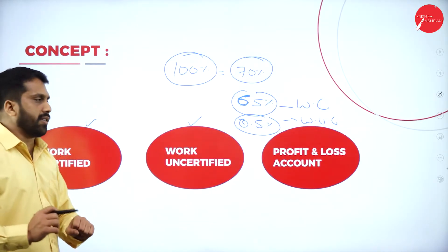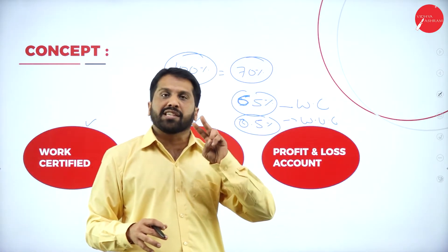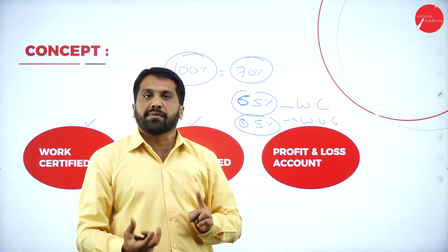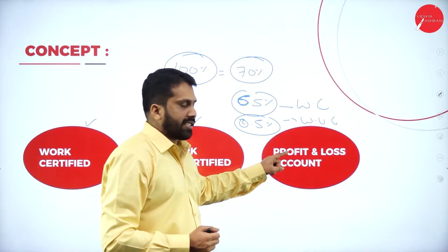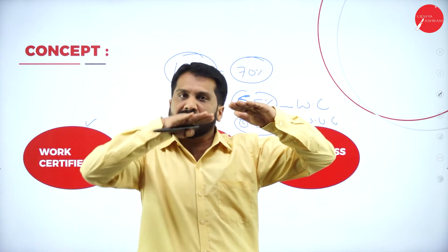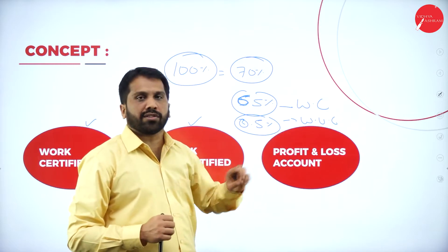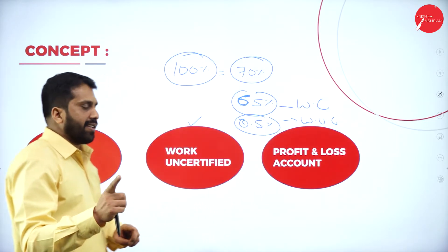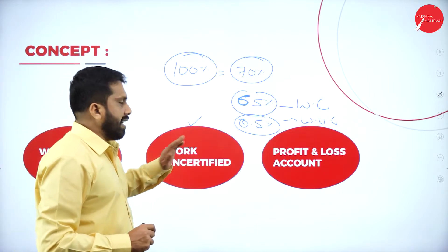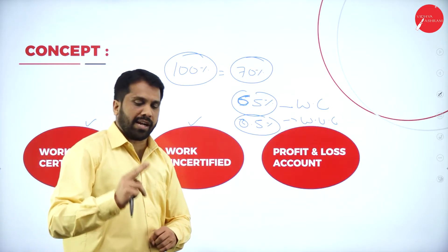Now, what is a profit and loss account? In your contract, if it is a 2-year contract, in the second year whatever profit you get, we call it profit and loss. If your income is more and expenditure is less, we call it profit. You now understand work certified, work uncertified, and profit and loss account.